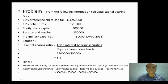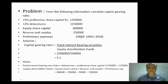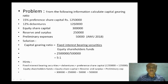From the following information calculate capital gearing ratio: 15% preference share capital rupees 12,50,000; 12% debentures rupees 12,50,000; equity share capital rupees 30,00,000; reserve and surplus rupees 2,50,000; preliminary expenses rupees 50,000. Capital gearing ratio equals fixed interest bearing securities divided by equity shareholders fund. Preference share capital and debentures are both fixed interest bearing securities.